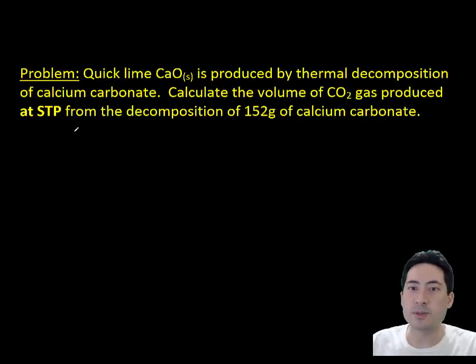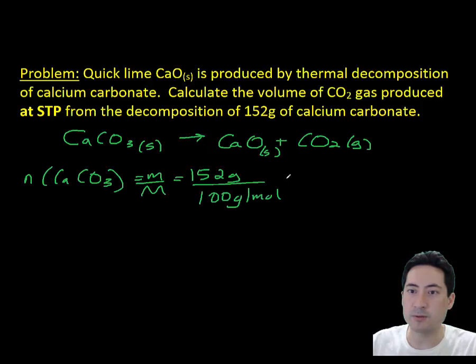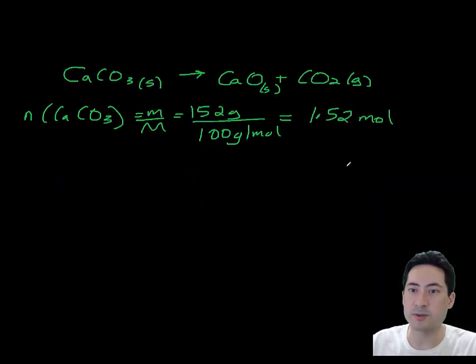Here is a problem. Quicklime is produced by decomposition. Tell me the volume of CO₂ gas given 152 grams of calcium carbonate. You do the balanced equation, it's all one molar. So calcium carbonate, 152 grams, gives us 1.52 moles, which means we have 1.52 moles of carbon dioxide.